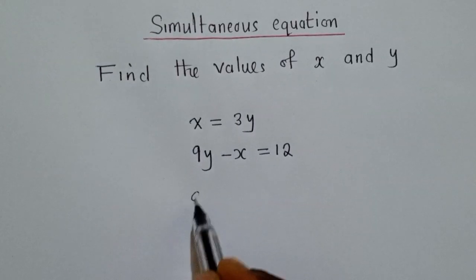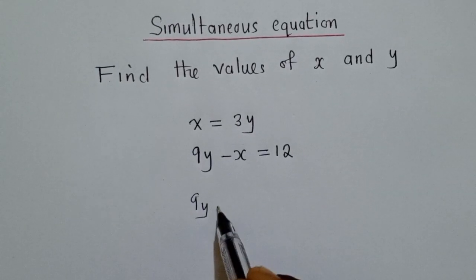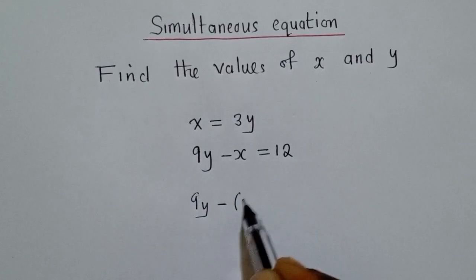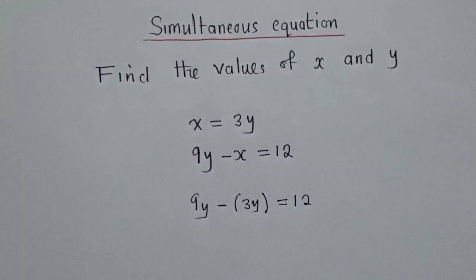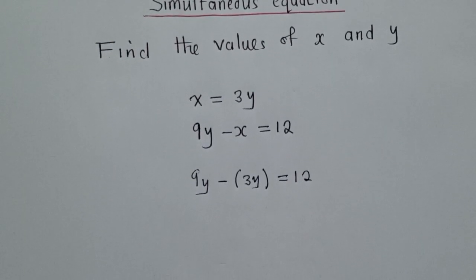So it will look like this, 9Y minus, open bracket, 3Y, close, is equal to 12. That's the first step.